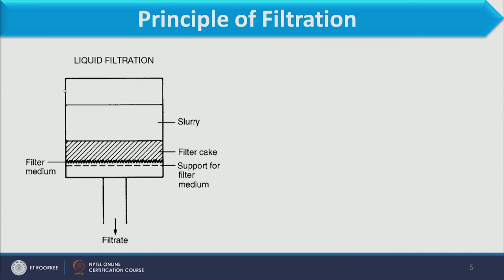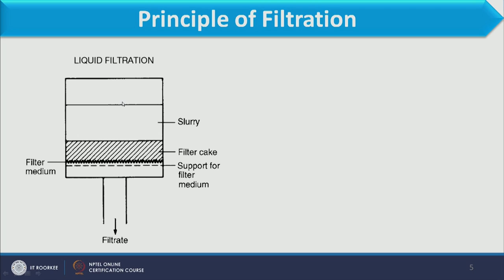Here we have the principle of filtration. The different components in a filtration system are: first, the filter media through which slurry passes; and second, a support below the filter media so that it stays in place — just as a funnel works as support for filter paper. In industry, below the filter media we also provide some support, and over the filter media we pass the slurry.